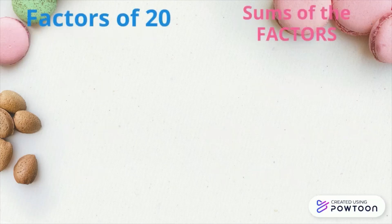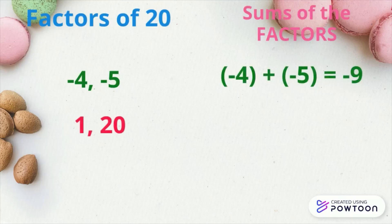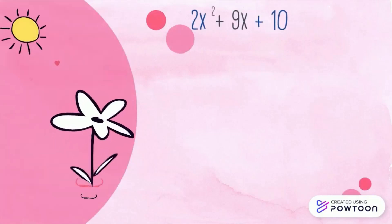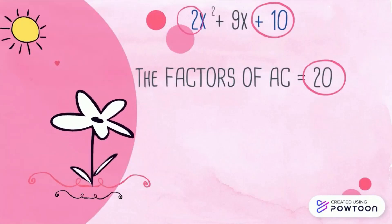We also have negative 4 plus negative 5 equals negative 9. 1 plus 20 is 21. Negative 1 plus negative 20 is negative 21. The perfect set of factors of 20 are 4 and 5 that when added equals 9.